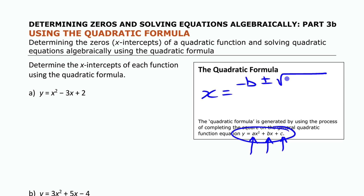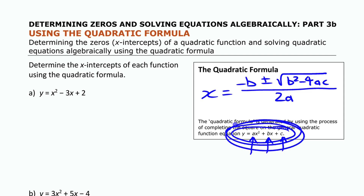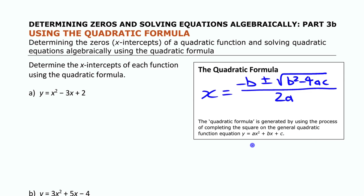The quadratic formula is: x equals negative b plus or minus the square root of b squared minus 4ac, the entire thing divided by 2a. This comes from taking the general quadratic and completing the square to solve for x — that's the subject of another video. For now, let's go ahead and use the formula.